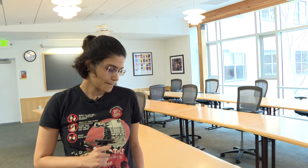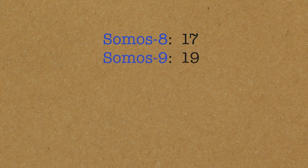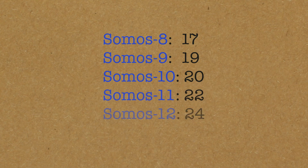So what happens with Somos 9 and 10 and 11? Same thing — you'll think you'll get integers in the beginning, but you'll eventually see fractions. There is an interesting thing about which term is a fraction: Somos 8 breaks at the 17th term. Somos 9 breaks at the 19th term, and Somos 10 breaks at the 20th term — so it's almost twice the sequence number. What changed? What made it break after doing so well?